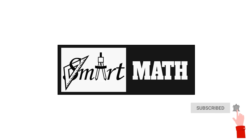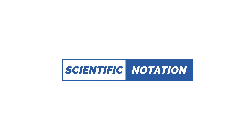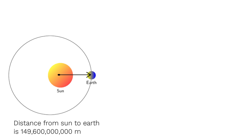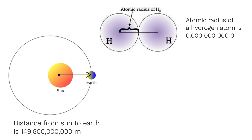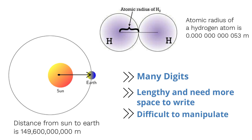Hi everyone, welcome to Smart Math Online Tutor. Through this video we are going to see about writing numbers in scientific notation. To have an idea, first look at this information regarding distances from the sun to earth and the radius of hydrogen atom. These numbers have many digits and they are lengthy and need more space to write.